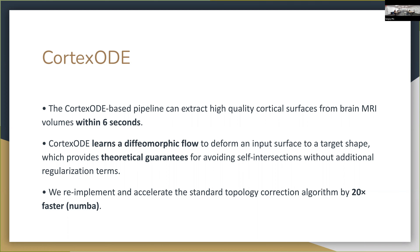Just optimizing what FreeSurfer does would have a huge practical impact, because a lot of labs don't use these neural network methods yet but do use FreeSurfer. When you use something like a new parallel setup running FreeSurfer to process a bunch of subjects simultaneously, you can still get pretty high CPU utilization — you just have to run the subjects in parallel.